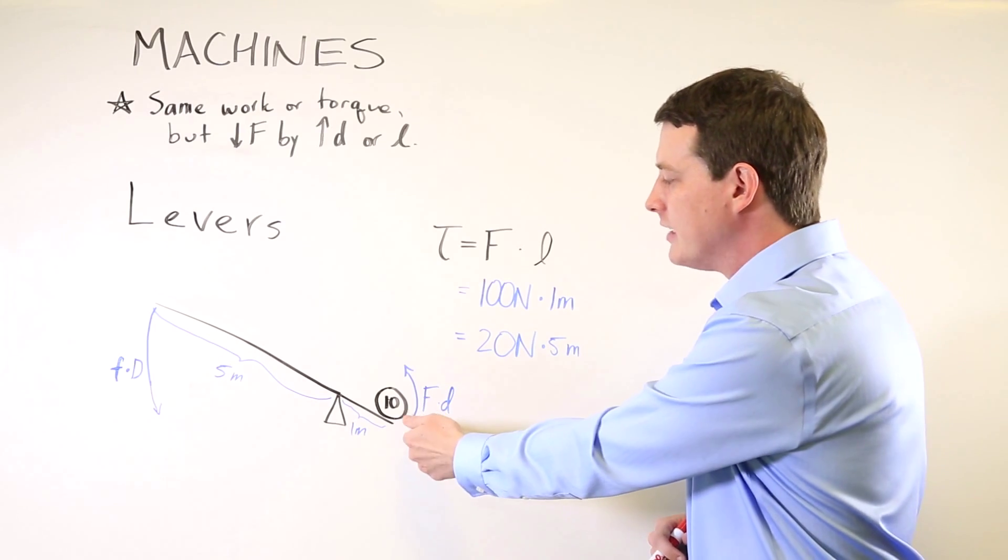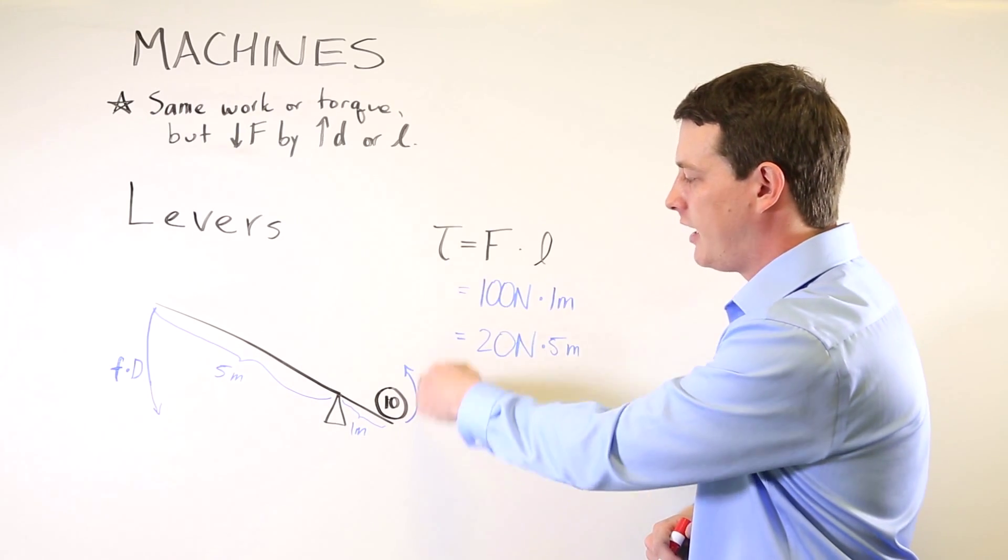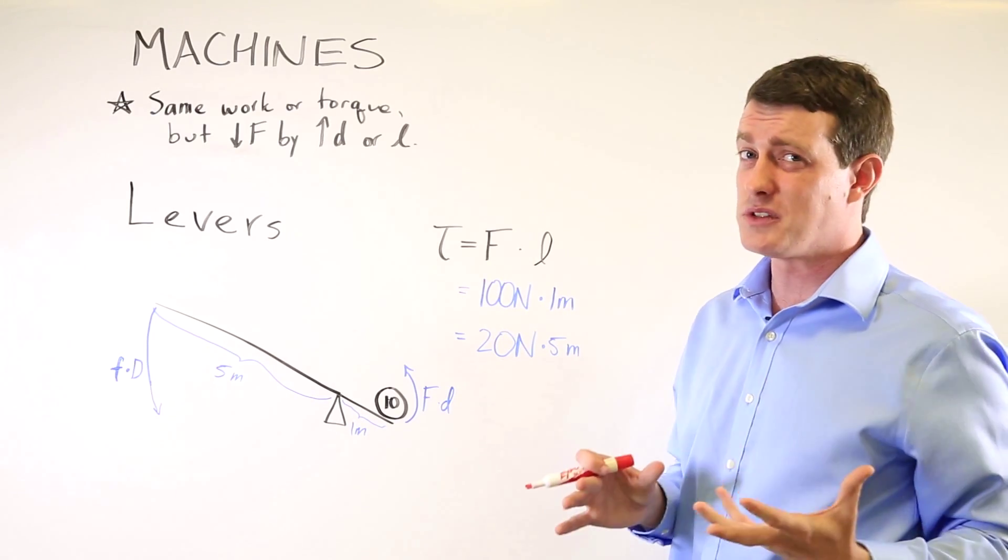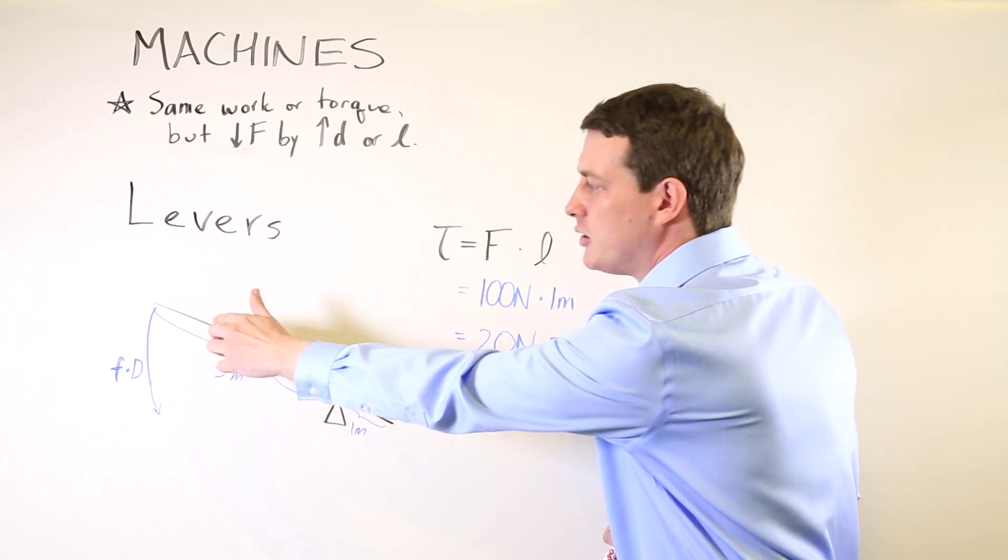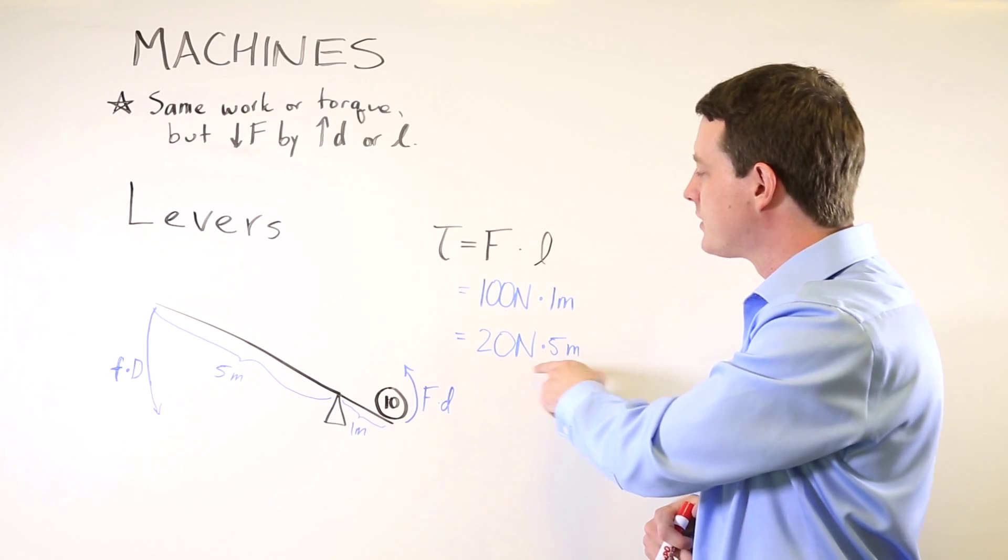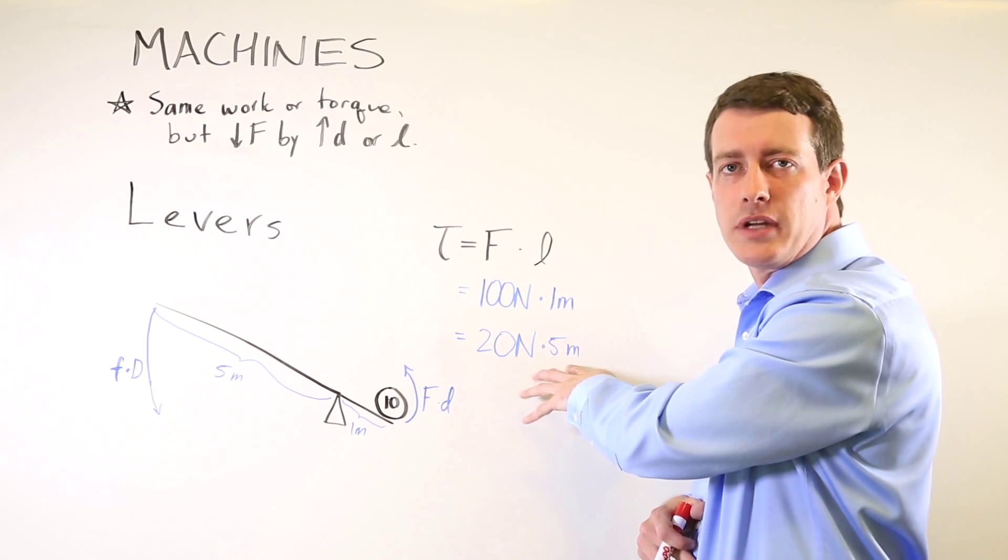On this side, it will be accomplishing a gravitational force that it's fighting of 100 newtons. But on this side, you'll only have to push down with 20 newtons instead because the lever arm is five meters.